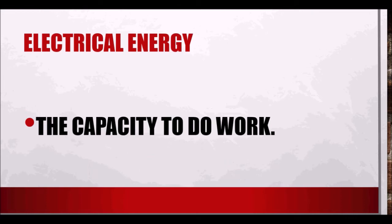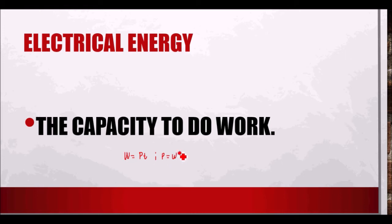We also have electrical energy, which is the capacity to do work. Because electrical energy is work itself, the formula for electrical energy is W = P × T. From the previous formula P = W/T, using algebra we rearrange to get W = P × T. Here W is in joules, P is in watts, and T is in seconds.